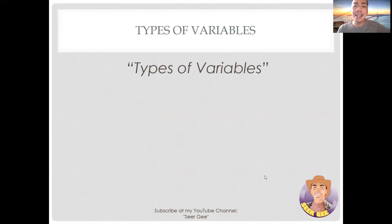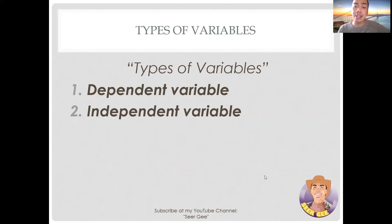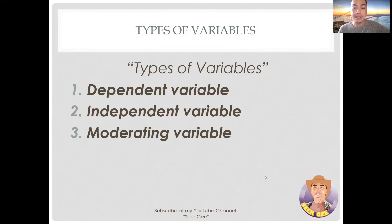Now, let us identify the types of variables you usually encounter in quantitative method. We have dependent variable and independent variable. These two types are the most basic types of variables that you need to learn, and it is really important that you know the distinction between the two. I will also discuss moderating variable.